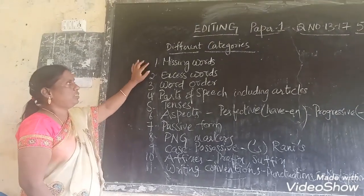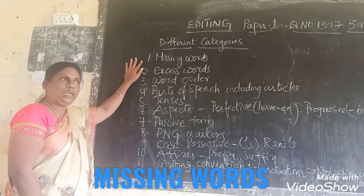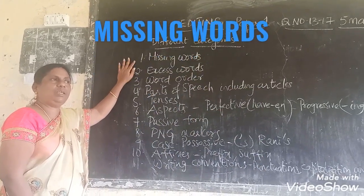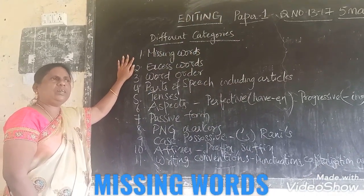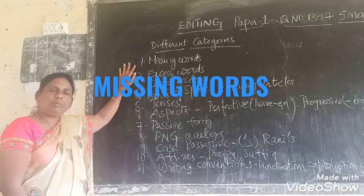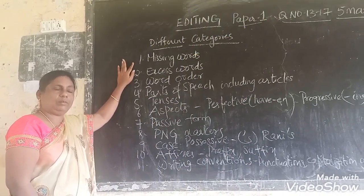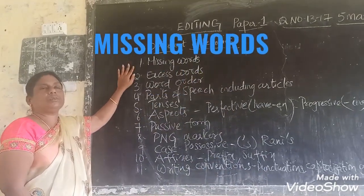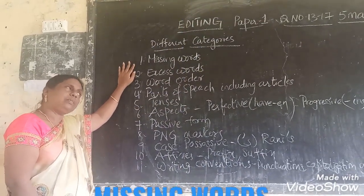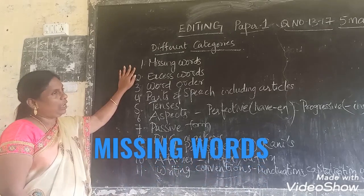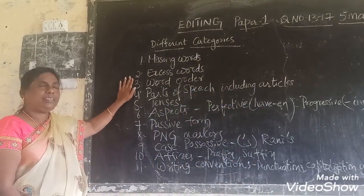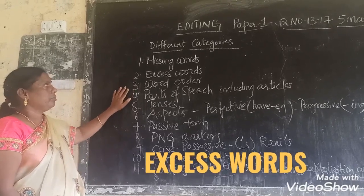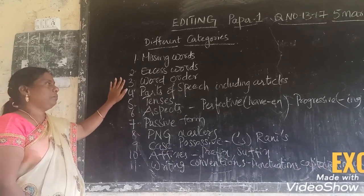So let's see what are the different aspects or categories involved in editing a passage. First, correcting a sentence — we have to see if any words are missing. Words in the sense whether they may be parts of speech, whether any conjunctions or prepositions are missed, and we have to replace them. Excess words: if any unnecessary words are there in the sentence, we have to remove them.